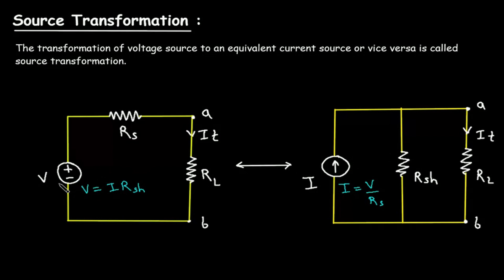To convert this voltage source into a current source, we know that according to Ohm's law, voltage is equal to current multiplied by resistance. So from this, current is equal to voltage divided by resistance. Here, RS is in series with this voltage source, so current is equal to this voltage divided by this series resistance.